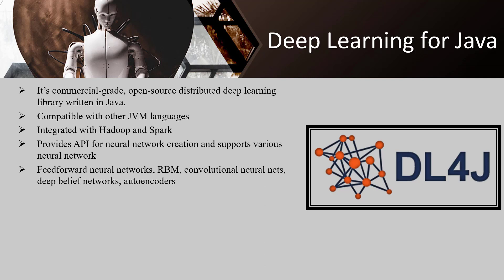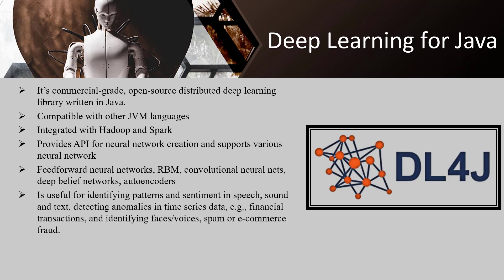DL4J provides an API for neural network creation and supports various neural network structures such as feed-forward neural networks, RBM, convolutional neural networks, deep belief networks, auto-encoders, and more. Deep neural networks and deep reinforcement learning are capable of pattern recognition and goal-oriented ML. DL4J is useful for identifying patterns and sentiments in speech, sound, and text; detecting anomalies in time series data, financial transactions; and identifying faces, voices, spam, or e-commerce fraud. DL4J is distributed under the Apache License version 2.